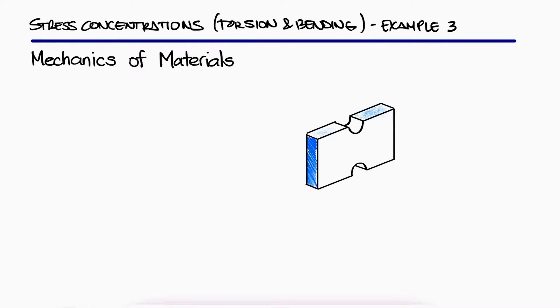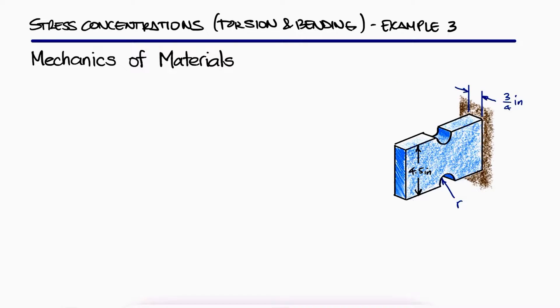Semicircular grooves of radius R have been milled as shown in the sides of the steel member. Using an allowable stress of 8 KSI, what is the largest bending moment M that can be applied to the member when A, the radius is 3 eighths of an inch, and B, the radius is 3 fourths of an inch?